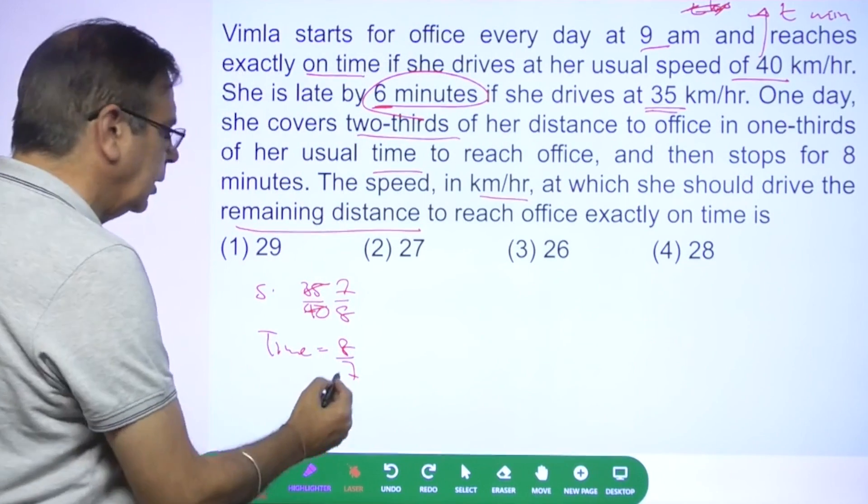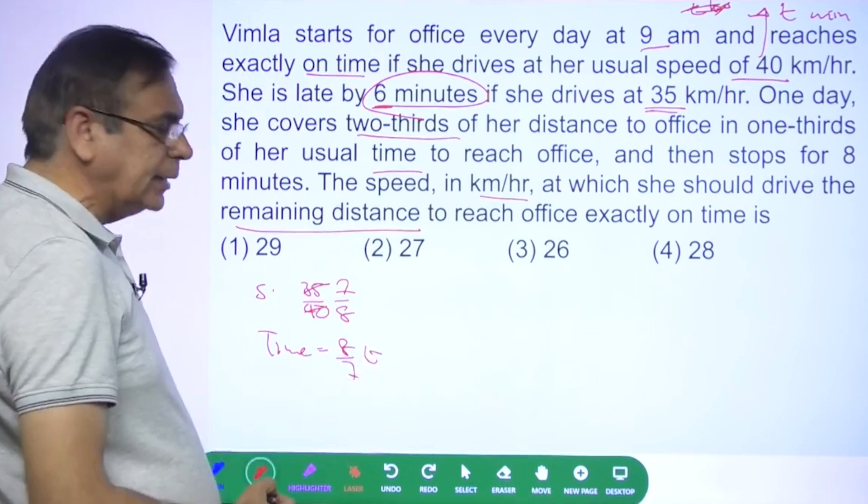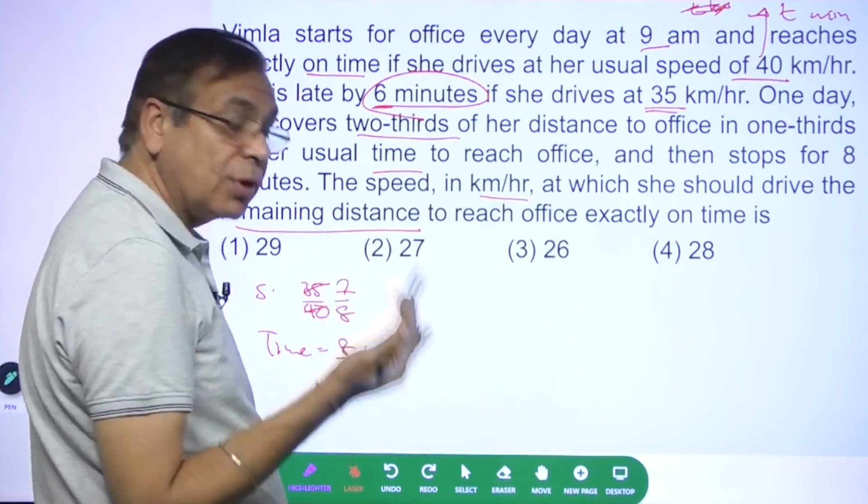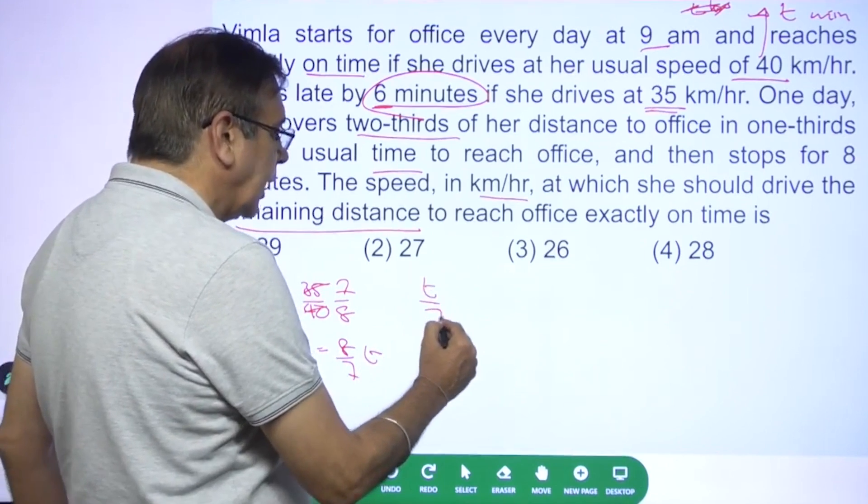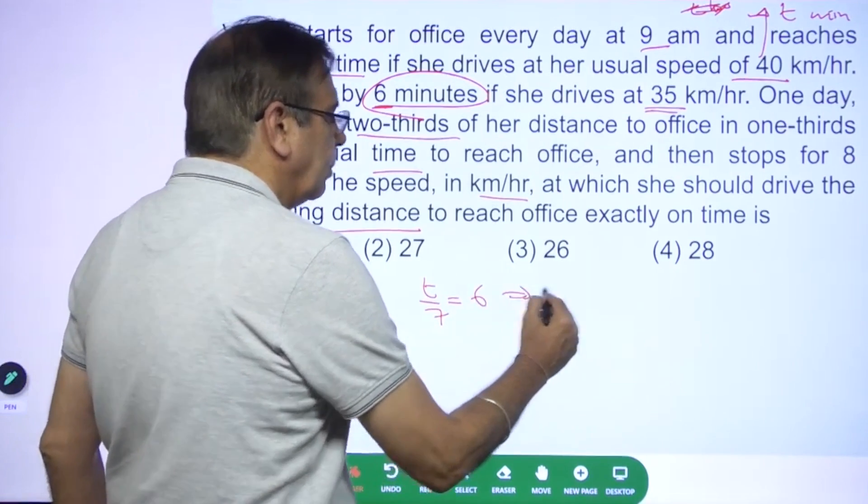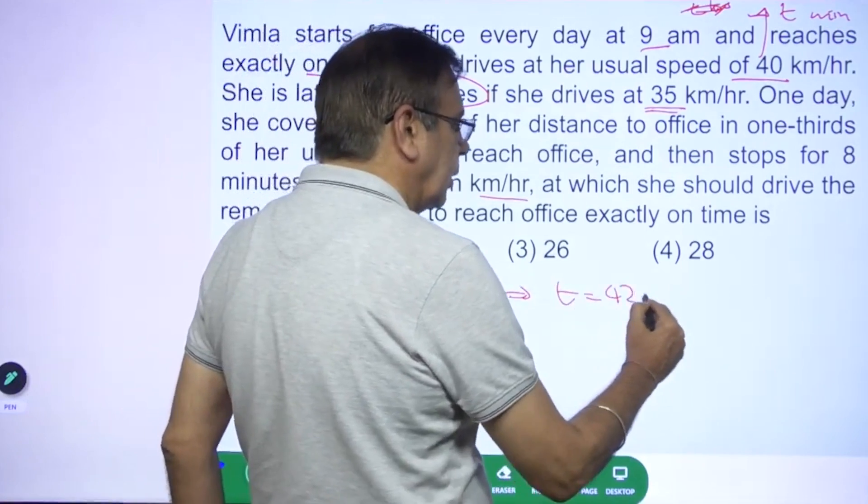If she was taking T minutes, now she'll take 8 by 7 T, and so what is the extra time she's taking? 8 by 7 T minus T equals T by 7. So the extra time is T by 7 which is 6 minutes, which implies earlier she was taking 42 minutes.